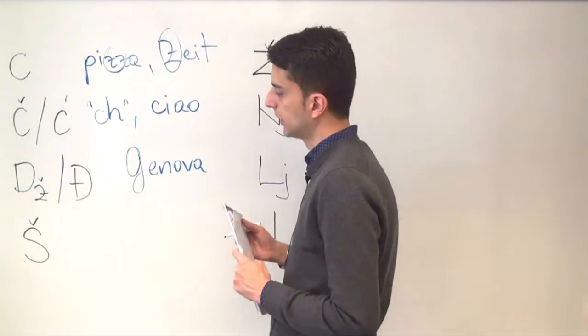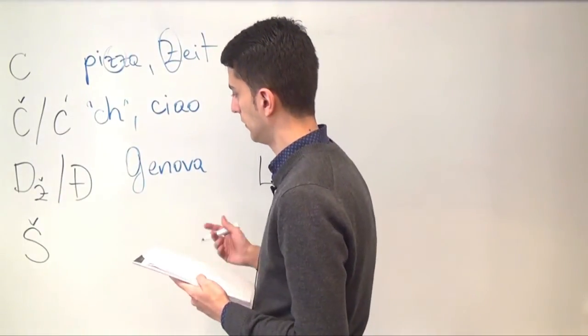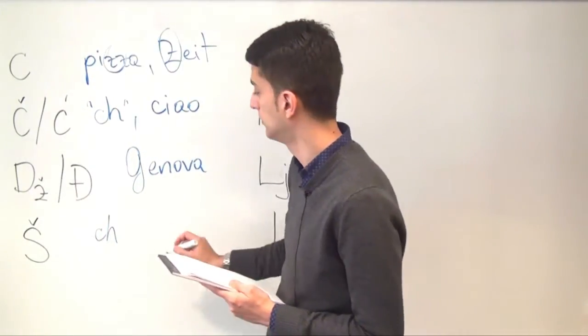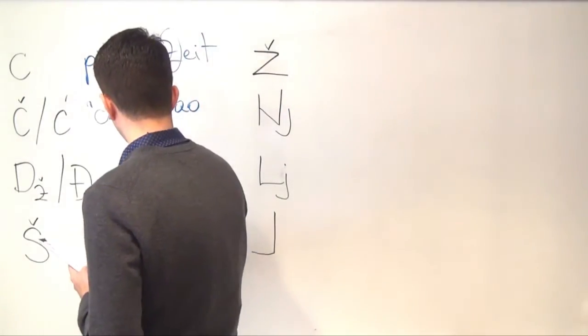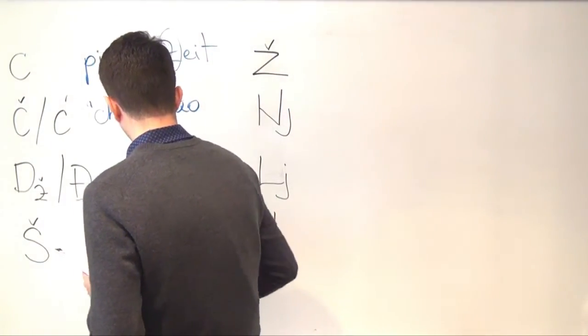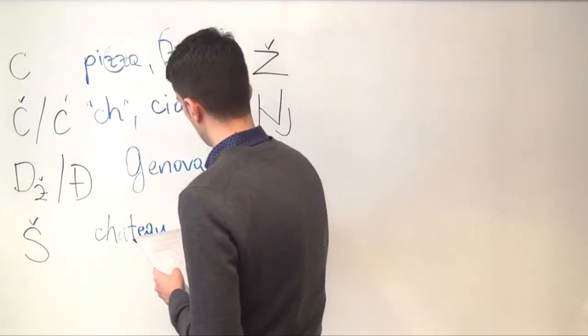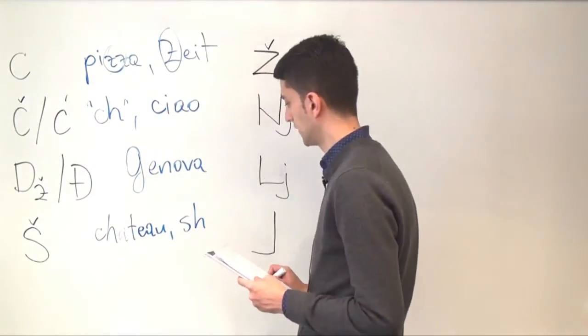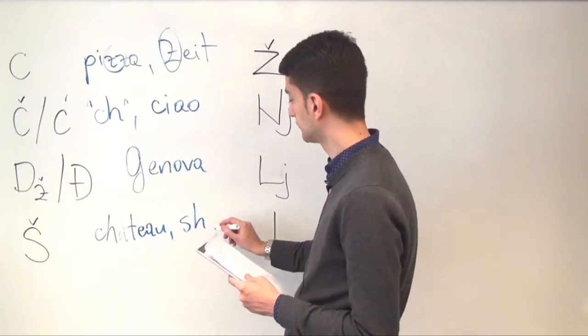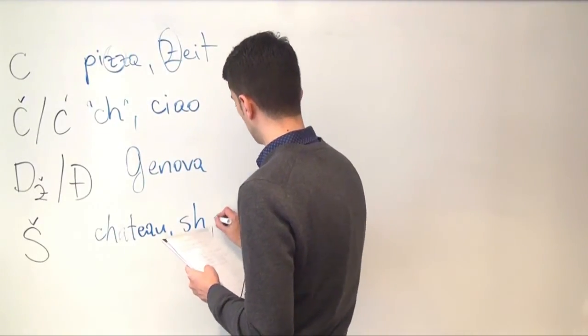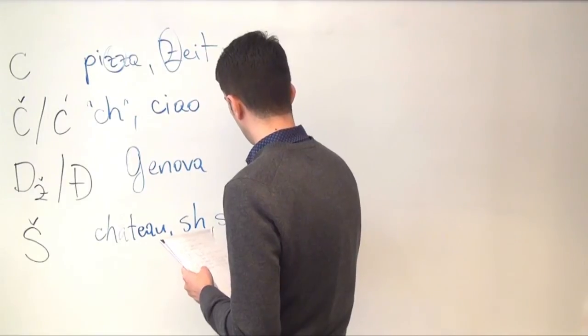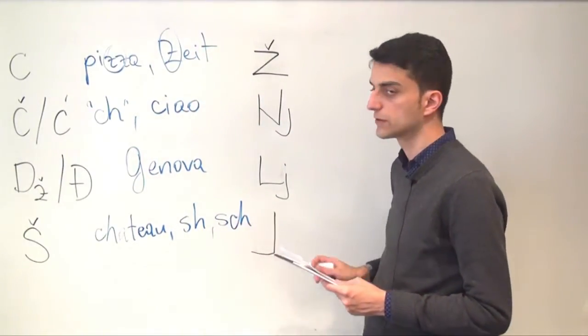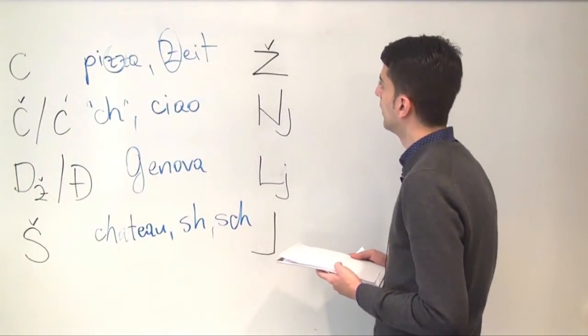Š can be heard in French and it's usually spelled with a CH, chateau for example. In English it's usually spelled as SH, shock for example. And in German it's spelled like this S-C-H, chadeau for example.